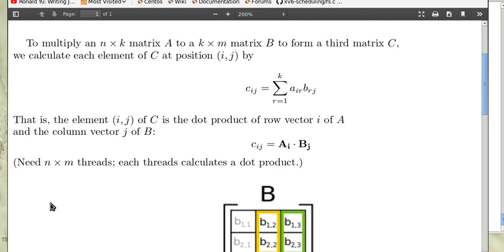And to do this we will need n times m threads to perform the calculation. Each thread calculates a dot product A_i dot B_j.